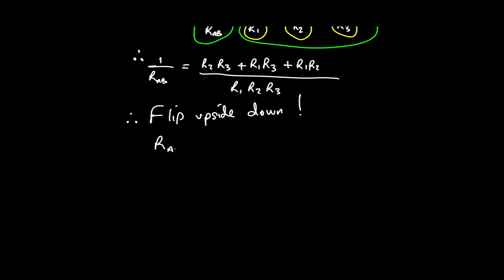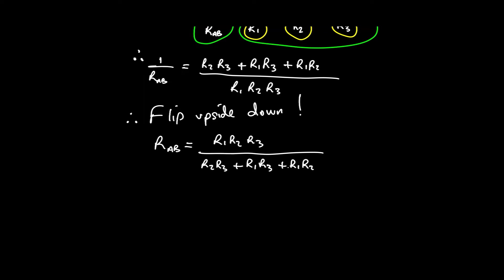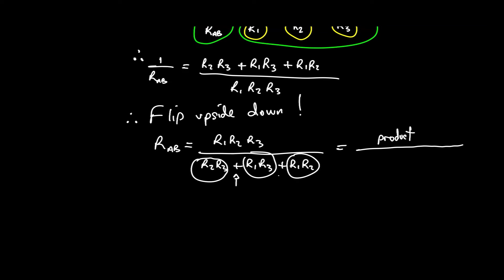Therefore, the resistance between A and B equals R1·R2·R3 over (R2·R3 + R1·R3 + R1·R2). Notice: the numerator is the full product of all three resistors, and the denominator is the sum of pairwise products. A good way to remember it: product over sum of products.